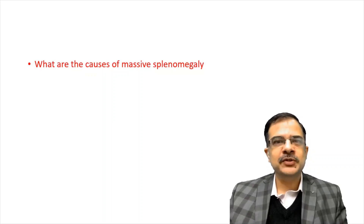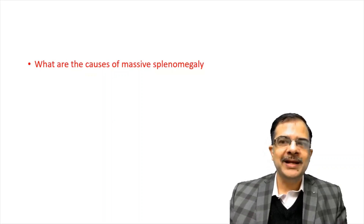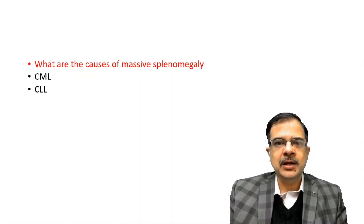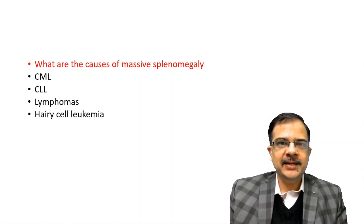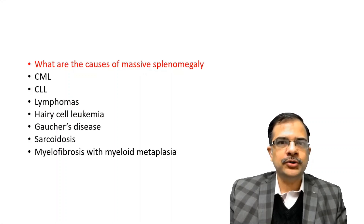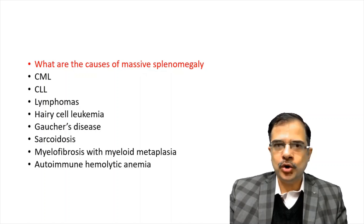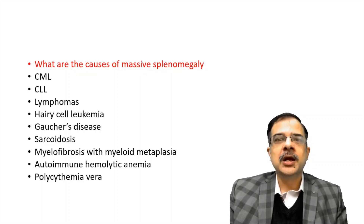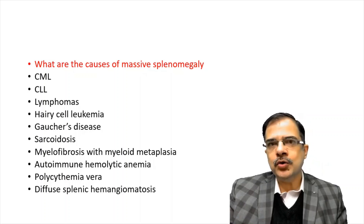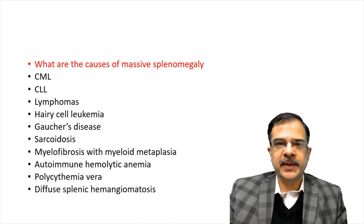What are the causes of massive splenomegaly — when the spleen is more than 8 centimeter below the costal margin? These include the fixed differential diagnosis: chronic myeloid leukemia, chronic lymphoid leukemia, lymphomas, hairy cell leukemia, Gaucher's disease, sarcoidosis, myelofibrosis, autoimmune hemolytic anemias, polycythemia vera, and diffuse splenic hemangiomatosis. These are the ten causes of massive splenomegaly.